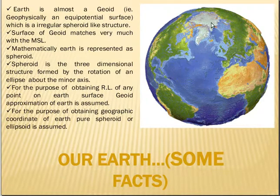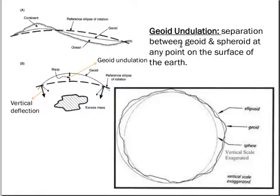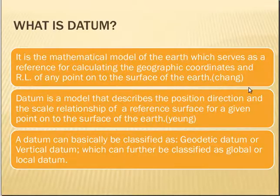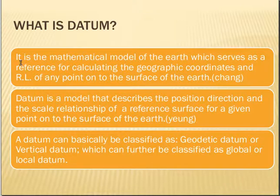Since earth has so many undulations, despite that it is best represented using a spheroid, which is also bulged from top and bottom. A spheroid is a three-dimensional structure formed by the rotation of an ellipse about its minor axis. So we have learnt two things: the sea surface approximately determines the geoid, which is an equipotential surface. When finding the height of any point on earth's surface, we use the geoidal model as a reference. For determining the geographic coordinates of any point, we use the mathematical model of earth, that is the spheroid.